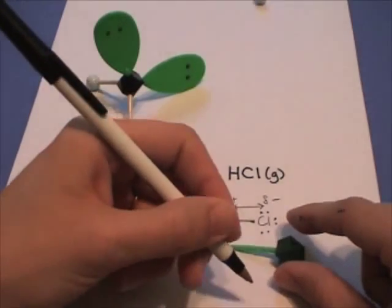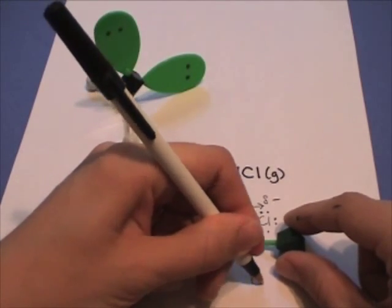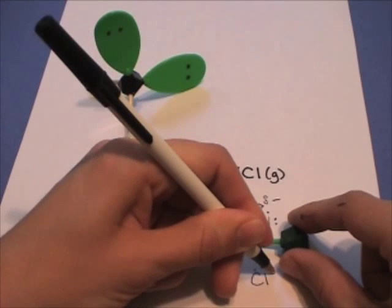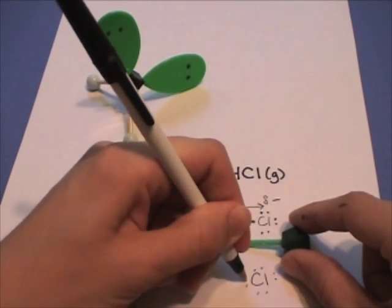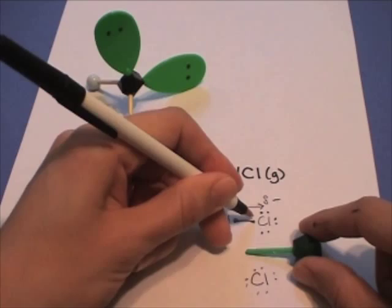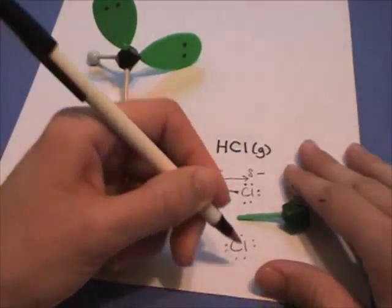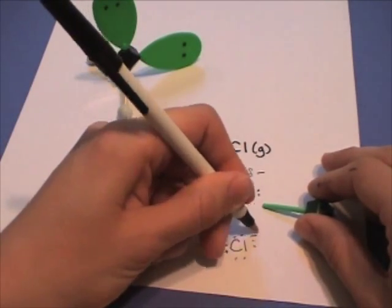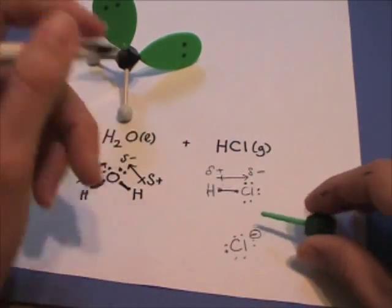So now, let's draw the Lewis structure for the Cl minus. It's a Cl with 1, 2, 3, 4, 5, 6, 7, 8 valence electrons. So this electron actually pops over to the chlorine, giving this a negative charge. So that's the chloride anion.